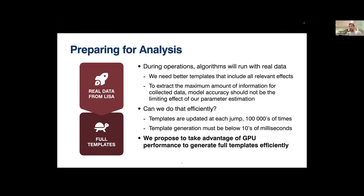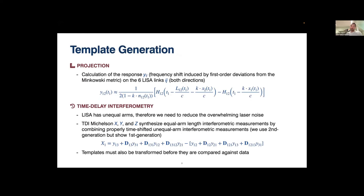During operations, algorithms will run with real data and will need better templates including all relevant effects — because we want to extract the maximum information from collected data. The accuracy of templates should not be the limiting factor in parameter estimation. The question is: can we do that efficiently? Template generation must be below a few tens of milliseconds. In this work, we propose to take advantage of GPUs to generate better templates efficiently and check those assumptions.